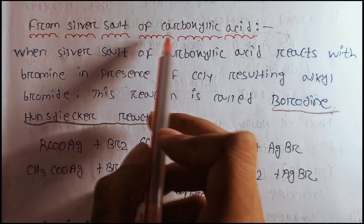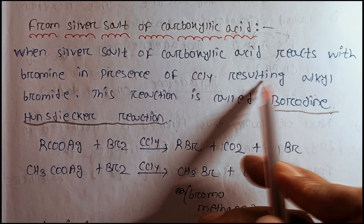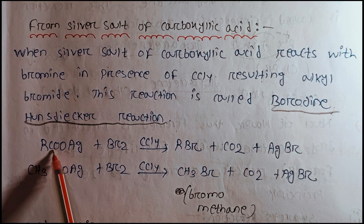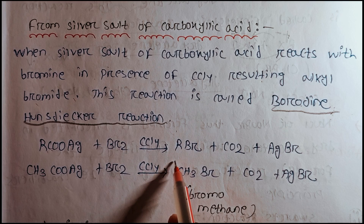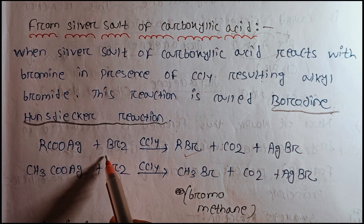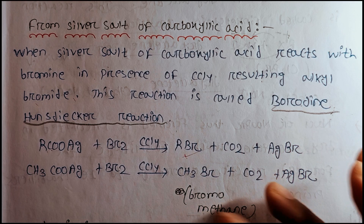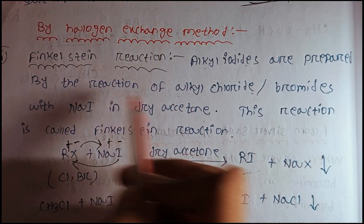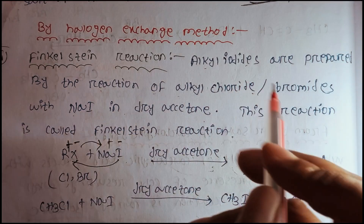From silver salt of carboxyl acid: when silver salt of carboxyl acid reacts with bromine in presence of CCl4, resulting alkyl bromide is formed. The reaction is: silver salt of carboxyl acid (RCOOAg) reacts with Br2 in CCl4 to give alkyl bromide. The reaction of alkyl chloride or alkyl bromide with NaI in dry acetone reaction is called Finkelstein reaction.